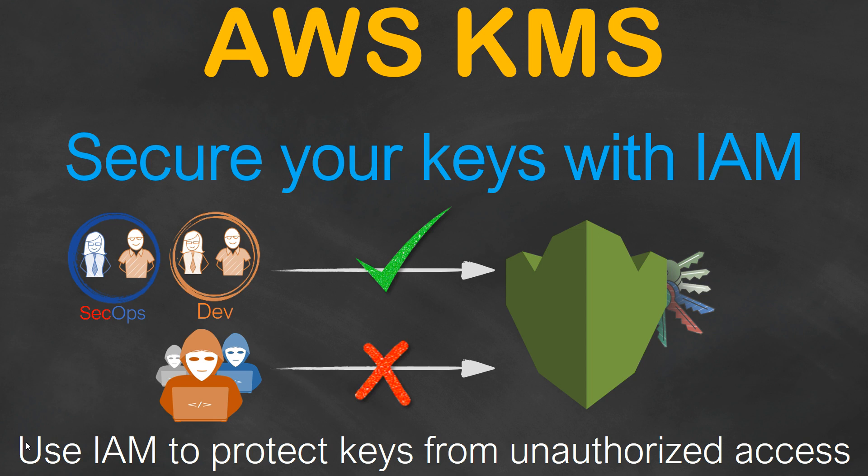Likewise, you can have another policy which can say: only if the request is coming from a particular IP, a VPC endpoint, or a private link, then give access to my KMS services. So all this kind of privileges and permissions is possible by using IAM. Let us go ahead and see how we can do this.